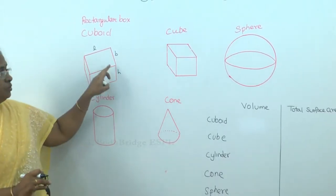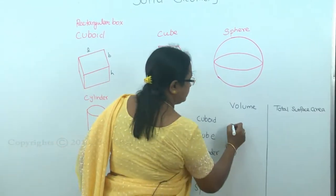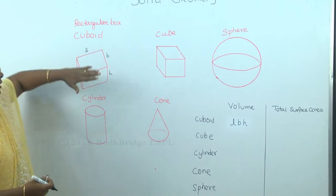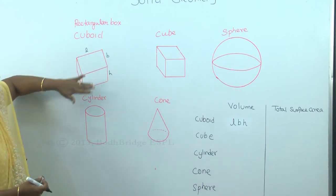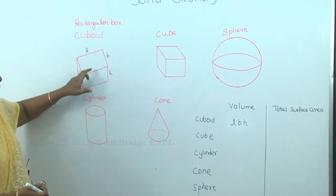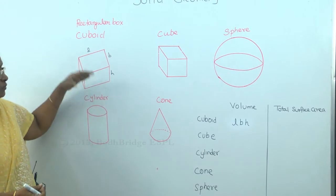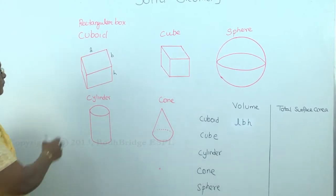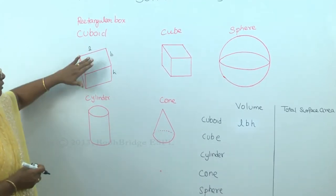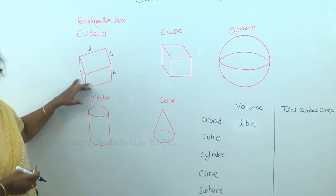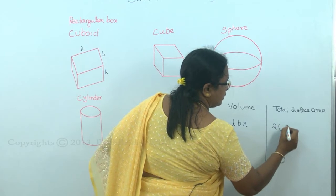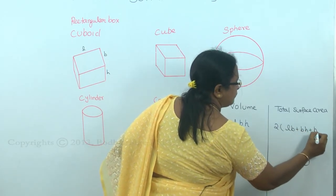The volume of a cuboid is length × breadth × height. For the total surface area, the top and bottom faces each have area length × breadth, the two side faces each have area length × height, and the other two faces each have area breadth × height. Since there are six faces with each pair repeated twice, the total surface area is 2(LB + BH + HL).